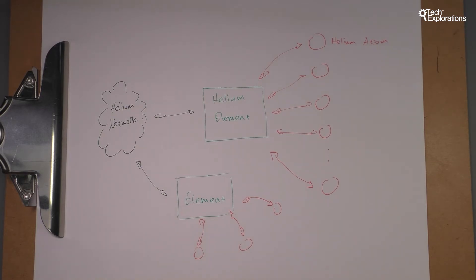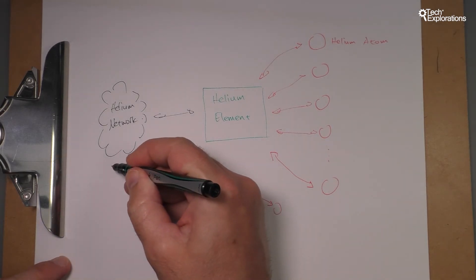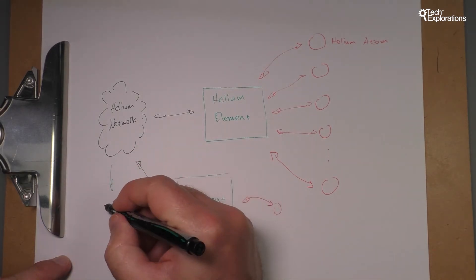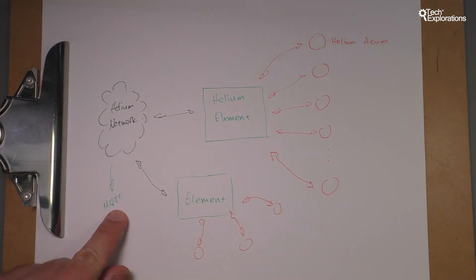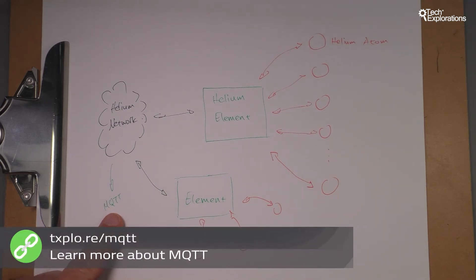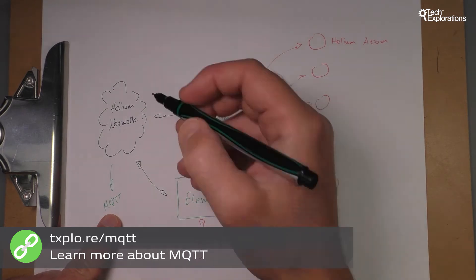Now once your data gets into the Helium network then through the Helium dashboard you can choose what to do with it. So for example you may decide to forward the data to an MQTT transport application which is a very popular way to do such thing in internet of things applications. But this is a topic that I'm not going to cover in this set of lectures at all.